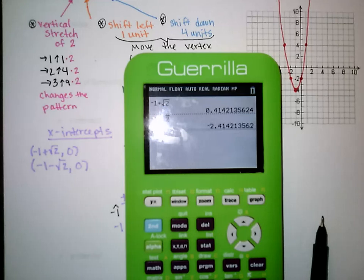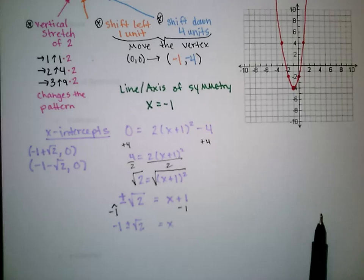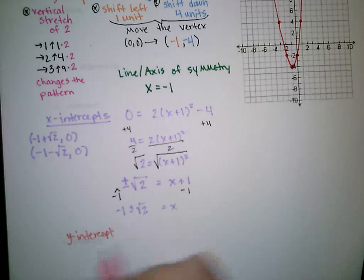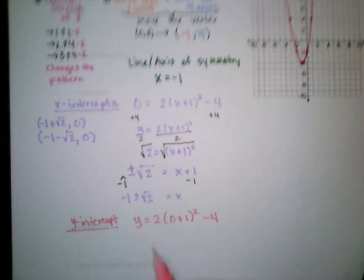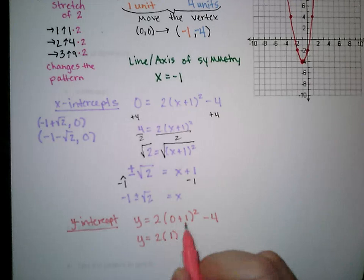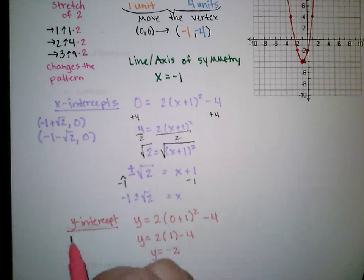For the y-intercept — there can be only one, otherwise it won't be a function. We put in 0 for the x value: y equals 2 times (0 plus 1) squared minus 4. That gives 2 times 1 squared, which is 2 times 1, minus 4 — so y equals negative 2. The y-intercept is (0, negative 2).